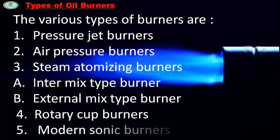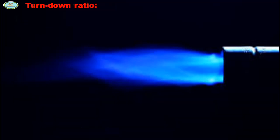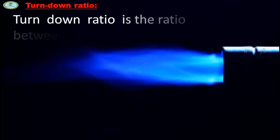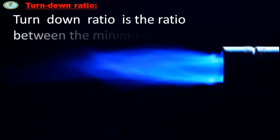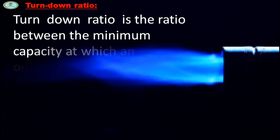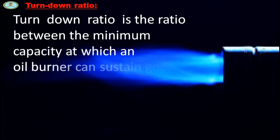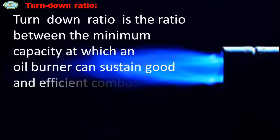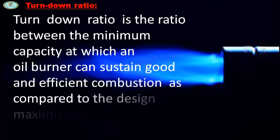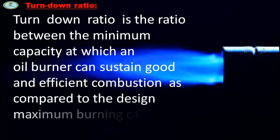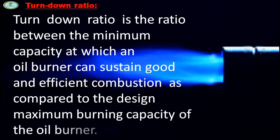Turn down ratio is the ratio between the minimum capacity at which an oil burner can sustain good and efficient combustion, as compared to the design maximum burning capacity of the oil burner.